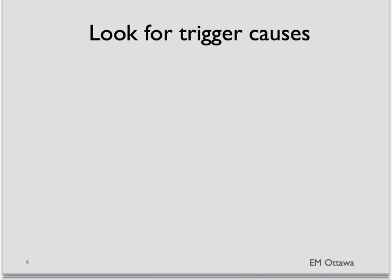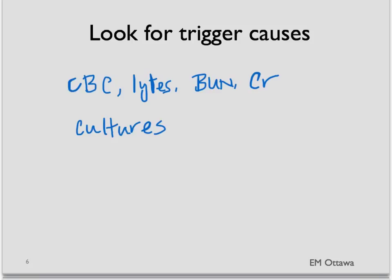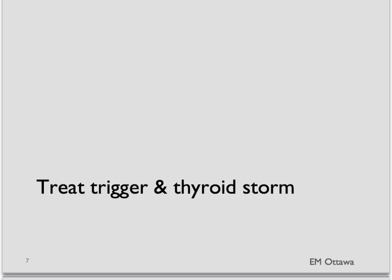Remember how thyroid storm is usually triggered? Besides looking for thyroid storm itself, we may still have to look for the trigger. Therefore, we may need to do labs such as CBC, electrolytes, BUN, creatinine, and cultures — that might help you find the trigger. Remember, these patients often have two diagnoses: the thyroid storm and the trigger itself. Both may need to be addressed at the same time.